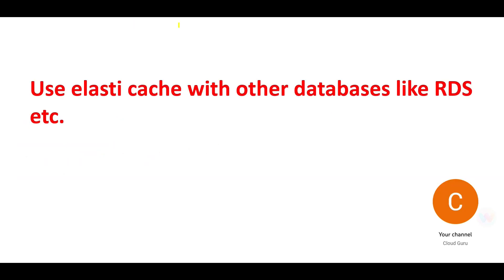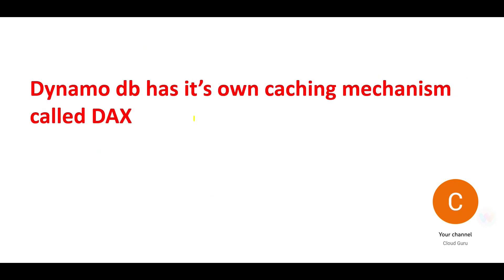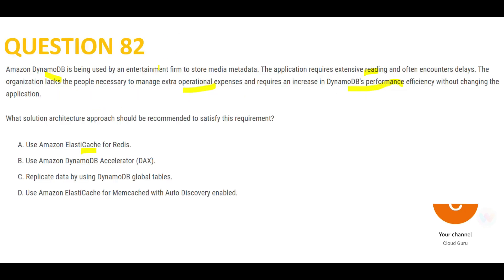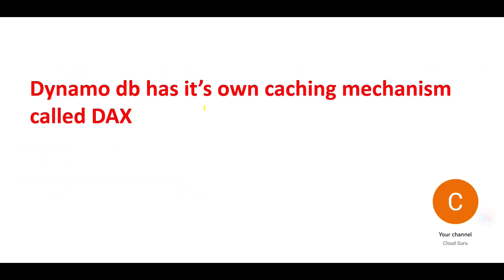I would go straight to caching. Should I use ElastiCache? No — ElastiCache works with databases like RDS. DynamoDB has its own caching mechanism called DAX. So I will use DAX. Remember: DynamoDB does not use ElastiCache; it has its own caching mechanism called DAX.